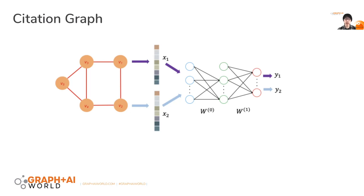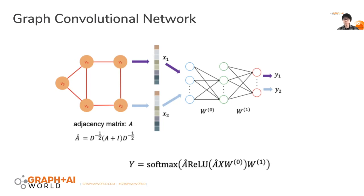Now let's see how GCN addresses this problem. GCN essentially combines the feature vector of each node with their graph features to improve prediction accuracy. In this GCN model, we have one hidden layer. What's different from a regular neural network is that before we propagate the feature vector into our neural net, we first compute the average feature vector among each node and its neighbors — done by multiplying the feature matrix by the normalized adjacency matrix. I will call this horizontal propagation: propagating information along the edges.